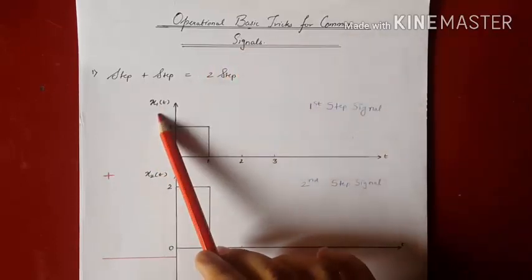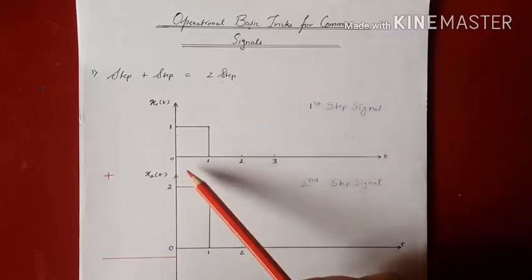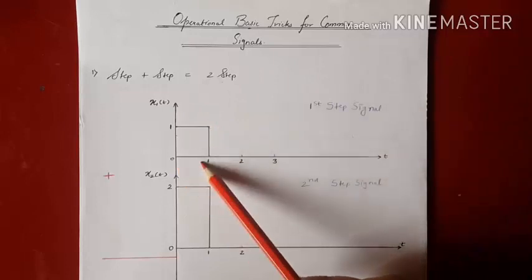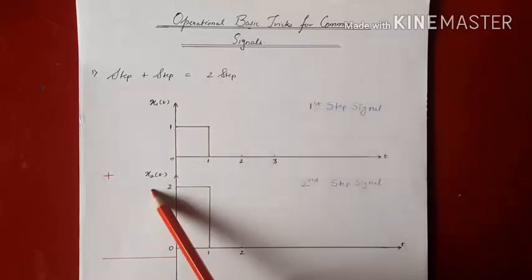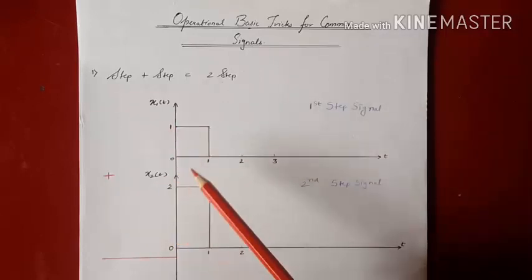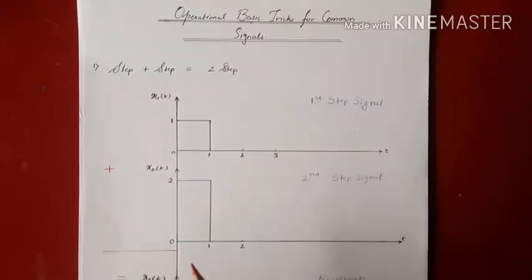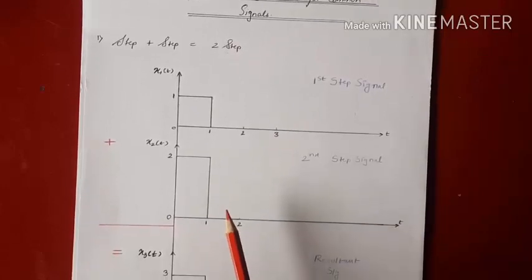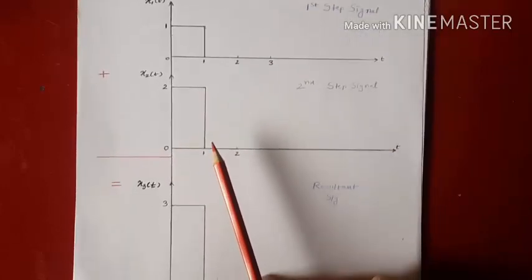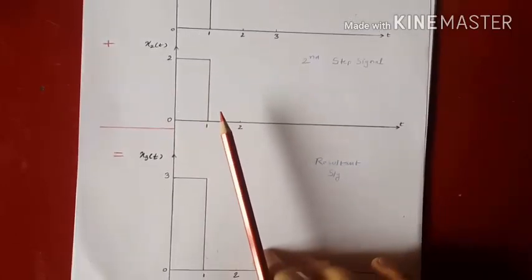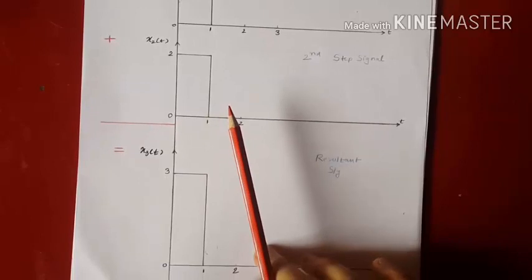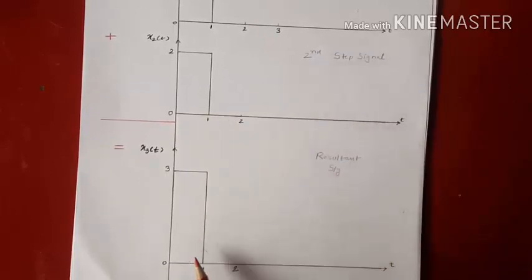Consider x1 of t, a step signal of finite duration 0 to 1 and amplitude 1. x2 of t is another step signal of the same duration and amplitude 2. When I add them I should get another step signal x3 of t, with amplitude 3, which is the addition of the amplitudes of the previous two signals. The duration remains the same because the parent signals had the same duration.